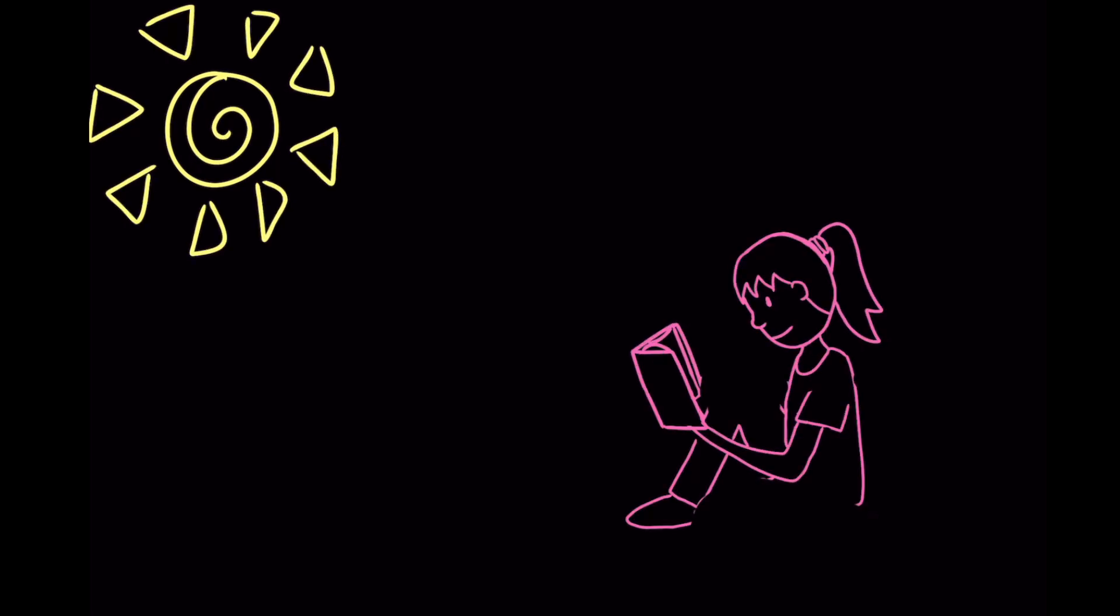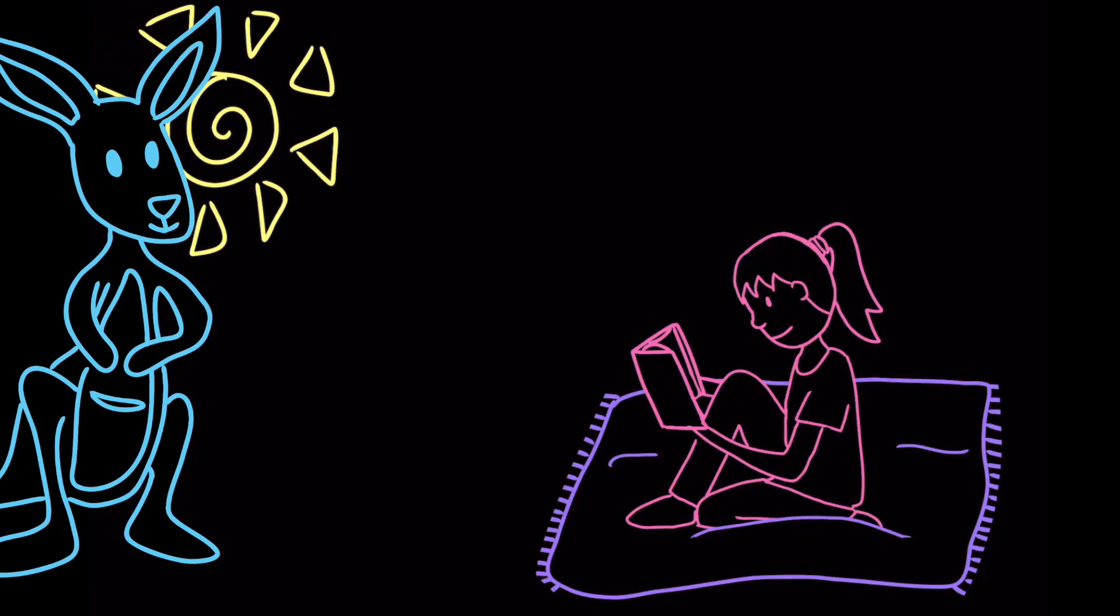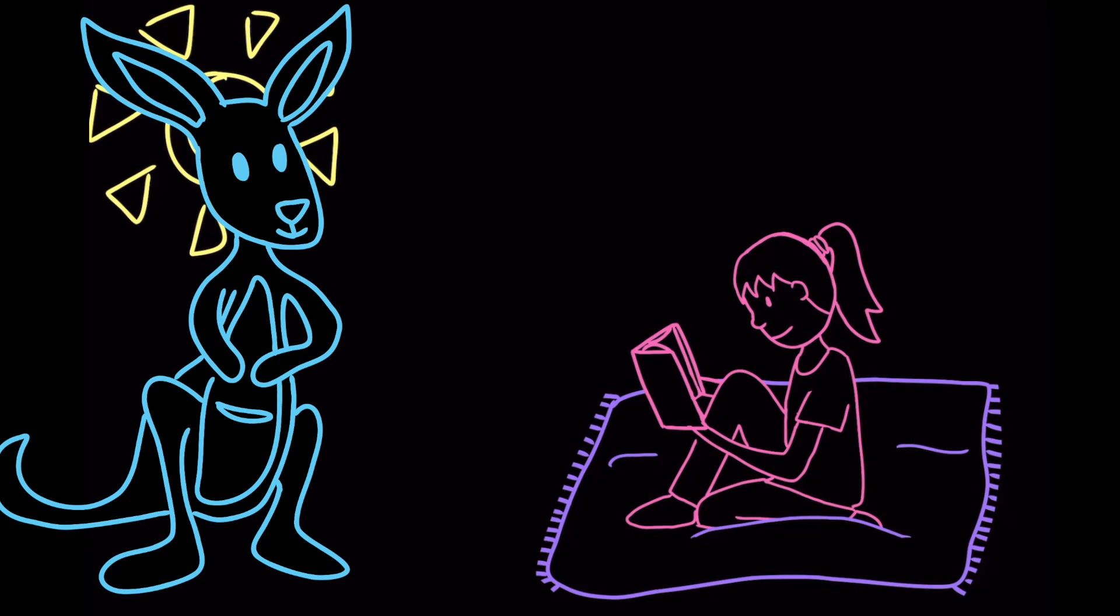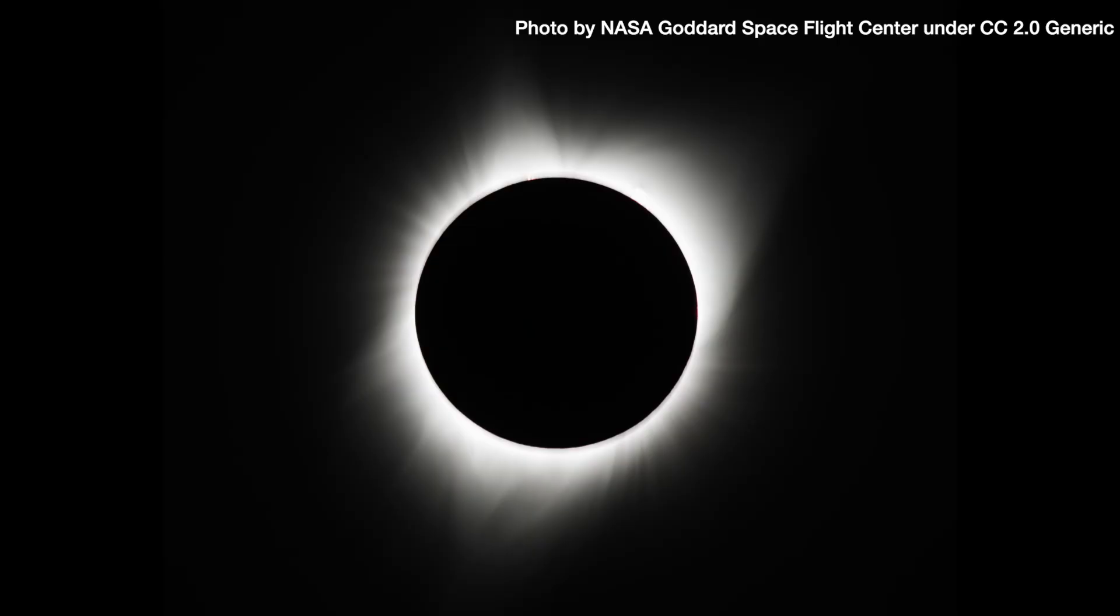Have you ever been minding your own business, enjoying the sun, when someone steps in front of you and blocks your sunlight? This is pretty much what happens during a solar eclipse, except on a planetary scale.